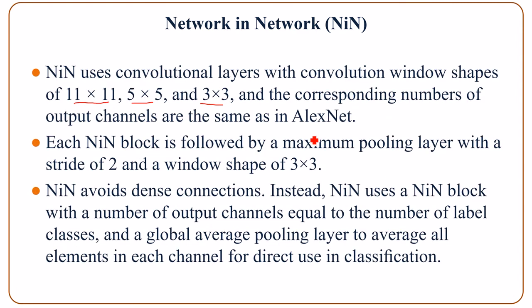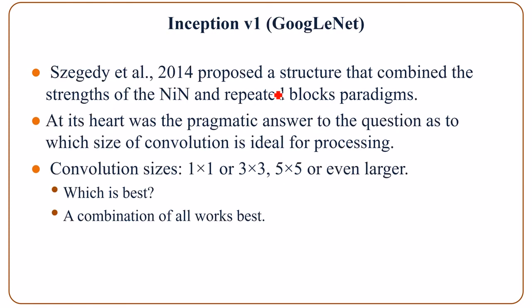The special thing in NIN design is that it avoids dense connections entirely. Instead, it uses a block with a number of output channels equal to the number of label classes, and eventually a global average pooling layer to average all elements in each channel for direct use for classification. Now we move on to the next architecture, namely Inception version 1, also called GoogLeNet. This architecture was proposed by Szegedy in 2014. There was a question when designing the convolutional layer: which size should we use? 1x1, 3x3, or 5x5, or even larger?